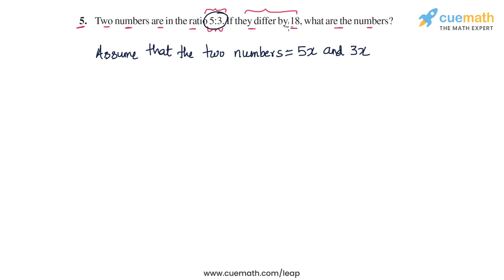Now we are told that they differ by 18. So the larger number, which is 5x, is 18 more than the smaller number. So we can write this piece of information like this: 5x minus 3x, the difference between the larger and the smaller number. This should be equal to 18.